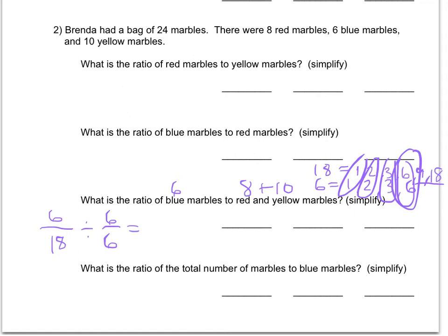So the greatest common factor then is 6, because that's the common factor that they share that's also the biggest. I divide top and bottom by 6, so 6 divided by 6 is 1, and then 18 divided by 6 is 3. So my ratio then is 1 to 3, 1 colon 3, and 1 over 3. That's in simplest form.